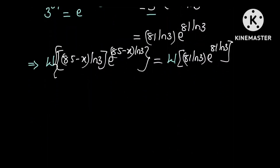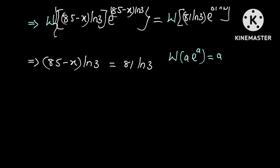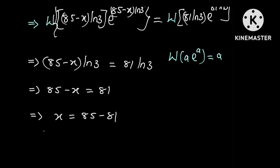From the property above, this implies that 85 minus x times ln 3 is equal to 81 times ln 3, since W of a times e to the a equals a. Dividing both sides by ln 3, we get 85 minus x equals 81, which implies that x equals 85 minus 81, and so x is equal to 4.